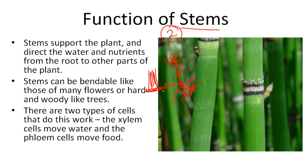There are two types of cells that do this work because remember there are two different functions of stems. The xylem cells are the ones that move the water from the roots, and the phloem cells help move the food.